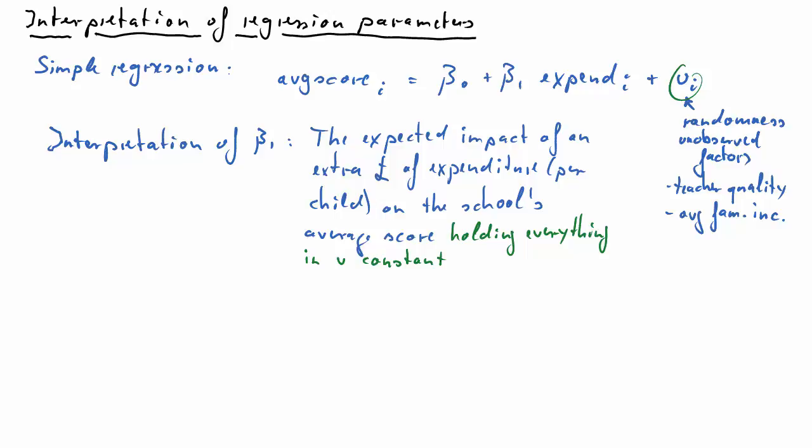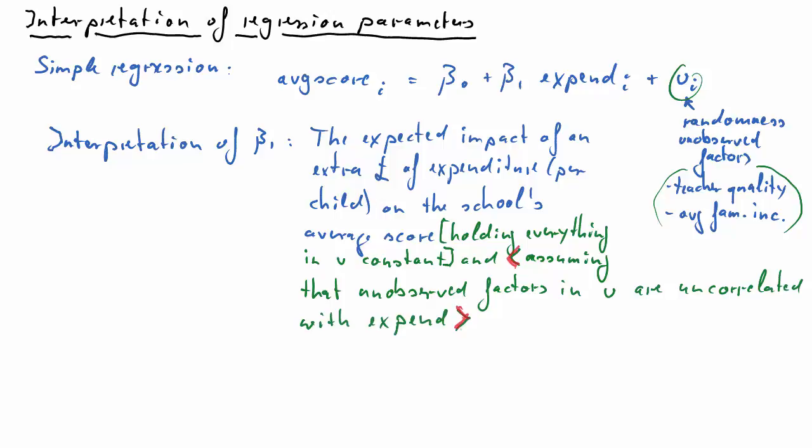So it's a change of expenditure but nothing else changes here, for instance, teacher quality and average family income. And the second caveat is that we have to assume that the error term, and therefore the unobserved factors which are captured by the error term, that is the teacher quality and the average family income for instance in our case, is uncorrelated with our explanatory variable expenditure. So the second part of the assumption, that's really just our simple linear regression assumption 4.